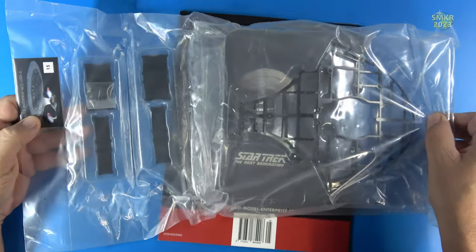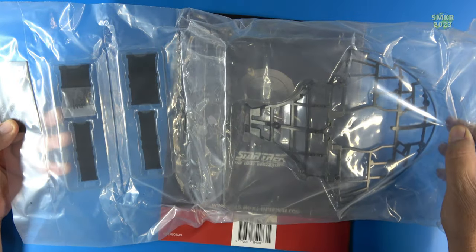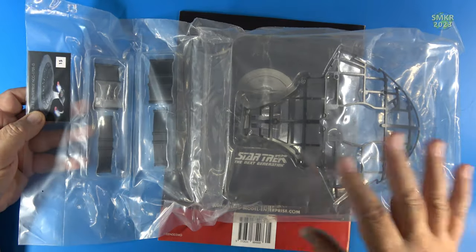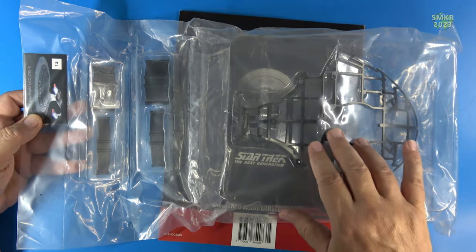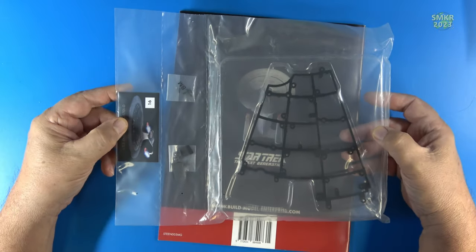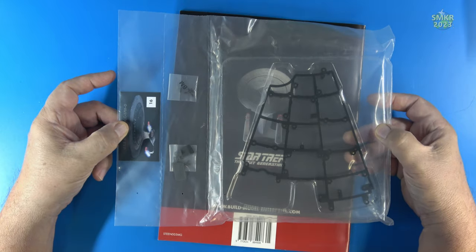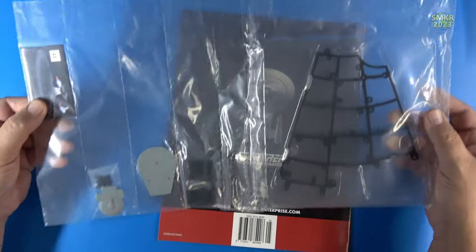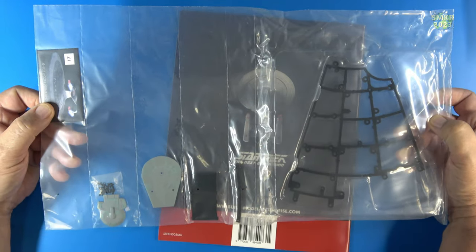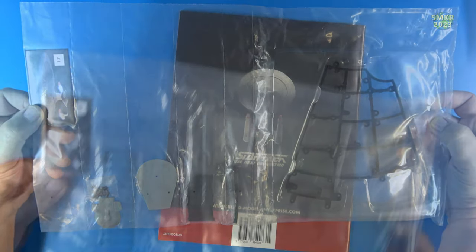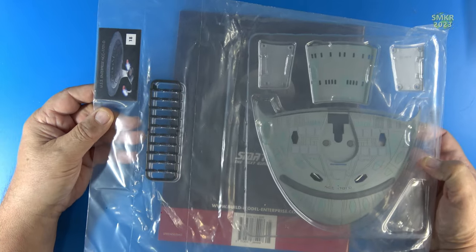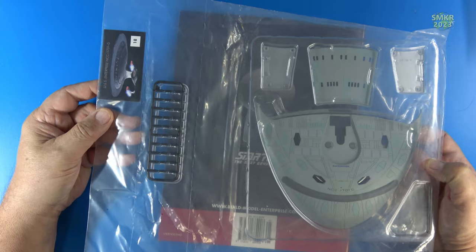Here is stage 15, and we get some frame supports and the cobra neck skeletal frame. Stage 16, upper saucer skeletal frame. Stage 17, again, upper saucer skeletal frame and the battle bridge. And stage 18, upper saucer panel and the cobra neck panel itself also.